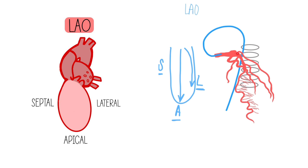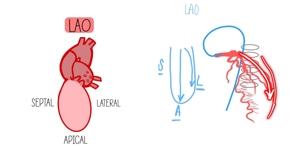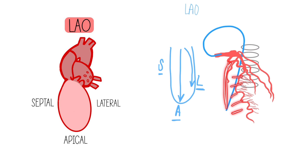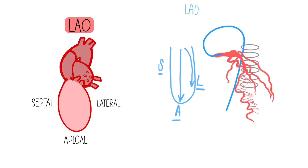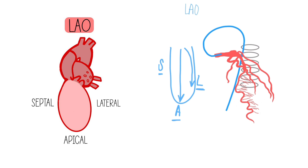That vessel pointing down in the middle towards the apex is the LAD, and the branches coming over to the lateral wall have to be part of the circumflex system. The septal perforators would be going towards the septal wall. Between the LAD and the circumflex, you can definitely see all of the LAD really well here, so that makes it a cranial view. You would call this LAO cranial.